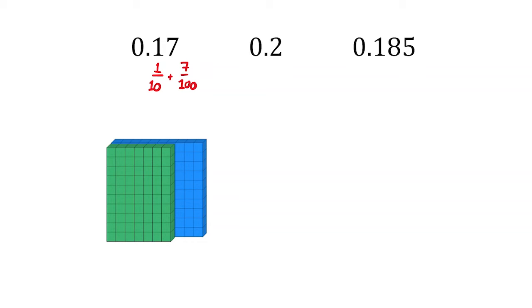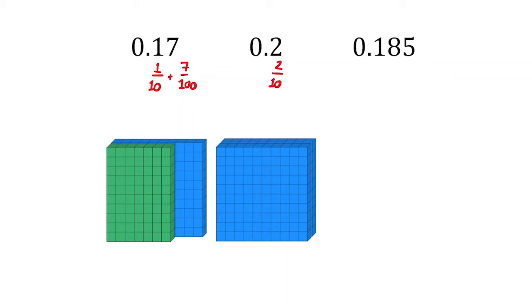For 0.2, we know this is two tenths and this will be made using two blues. Now the people who couldn't quite understand how 0.2 is bigger than 0.17 can now see this quite obviously.